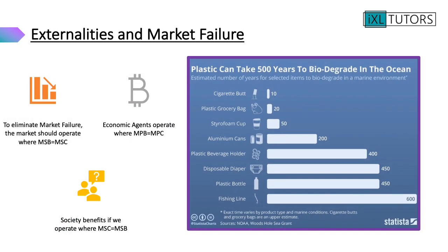Externalities create market failure. To eliminate this, the market should operate where social benefits equal social costs. However, economic agents only operate where private benefits equal private costs. Have a look at the example showing how long it takes for plastic to biodegrade in the ocean, and think about the impact of plastic on the environment and what type of cost it represents. Pause the video here.